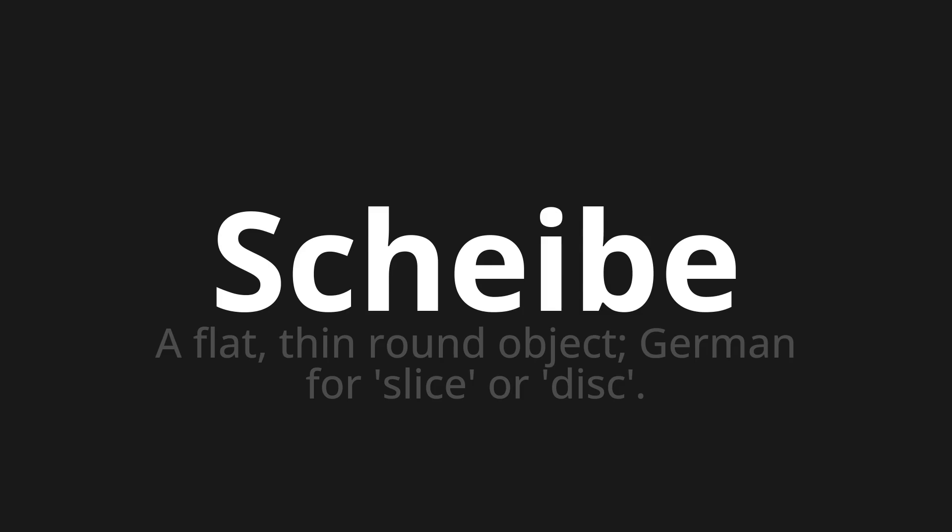The word means a flat, thin, round object — German for 'slice' or 'disk'. Let's say it all together: Scheibe. Scheibe. Scheibe. One more time: Scheibe.